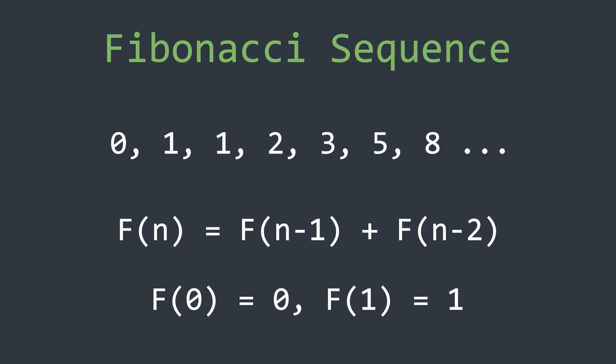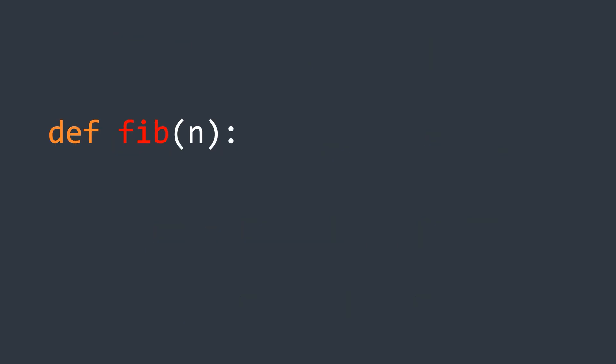Now let's look at the naive and inefficient approach before optimizing it using dynamic programming techniques. We'll start by defining a function that takes an input n. If n is less than or equals to 1, we simply return n handling our base case. Otherwise we recursively compute fib of n minus 1 plus fib of n minus 2.